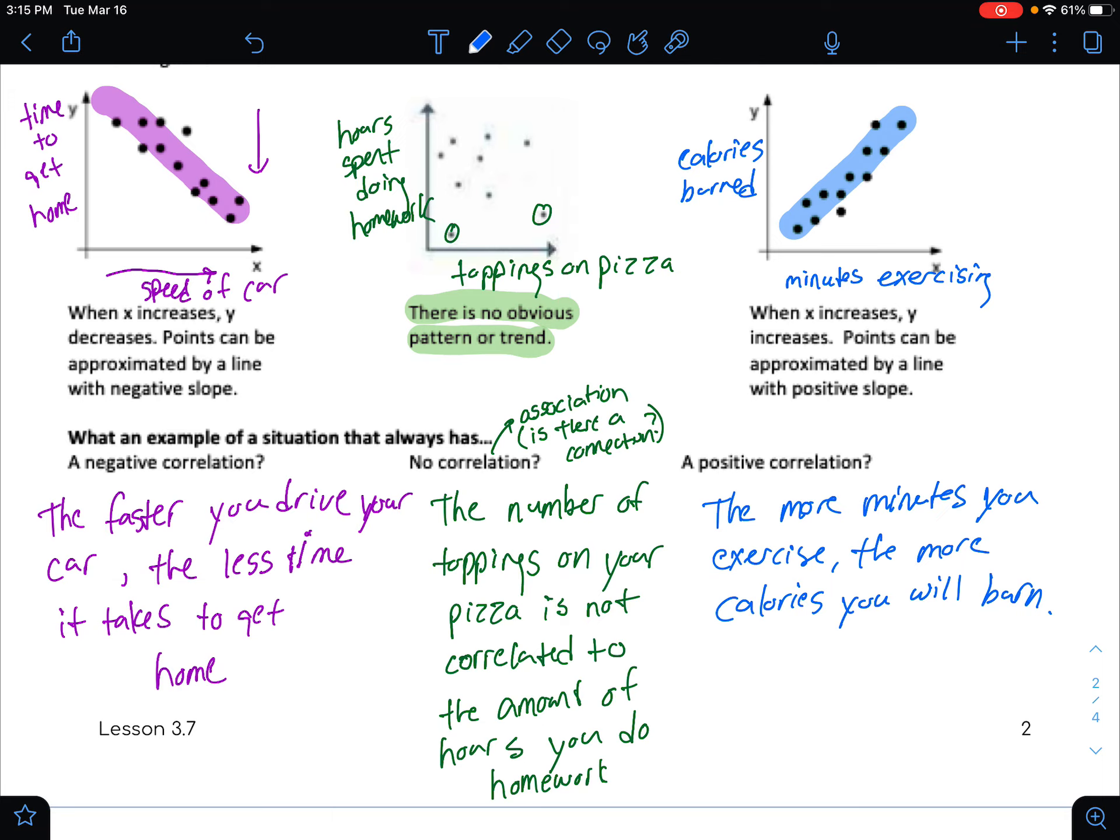There are many examples that you could come up with for two things that are positively correlated like this. Those are three examples of one that's negative, one that's no correlation, and one that is positive correlation. And hopefully that makes some sense.